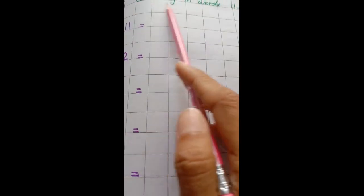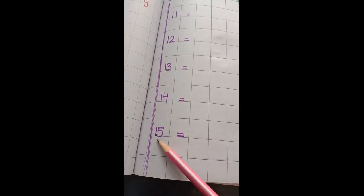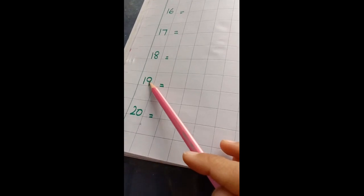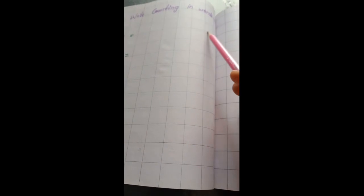Aap ish wale page per ish ki writing karenge aur padhenge spelling of twenty. And next word is counting in words eleven till fifteen. Eleven, twelve, thirteen, fourteen, fifteen. Next word is sixteen, seventeen, eighteen, nineteen, twenty. You will complete spelling for numbers here. This is your only work.